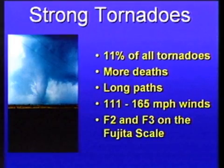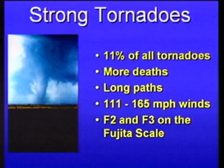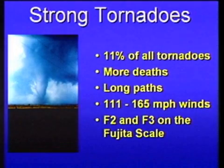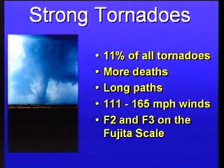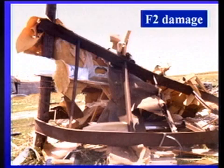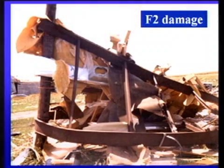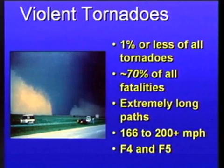Strong tornadoes — the next category — are what they call F2 and F3 on the Fujita scale. Those have winds much stronger, upwards of category 5 hurricane force. These can be on the ground for many, many miles and can also cause many more deaths. 11% of all tornadoes are actually in this sort of category. This is actually the shell of a mobile home that was picked up and slammed against a telephone pole and wrapped around it. Even that strong of wind can topple a mobile home and do quite a bit of damage.